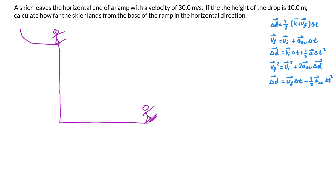The next step is to write down all the information that we have. Basically we're looking at the initial and final velocities, displacements, acceleration, and change in time. Let's start with the velocities. For velocity 1, the object is moving in this direction and we're going to fill it out for both the x direction and the y direction.